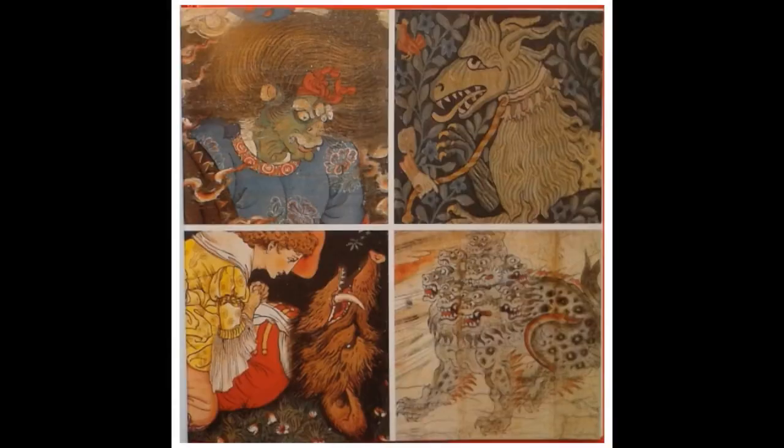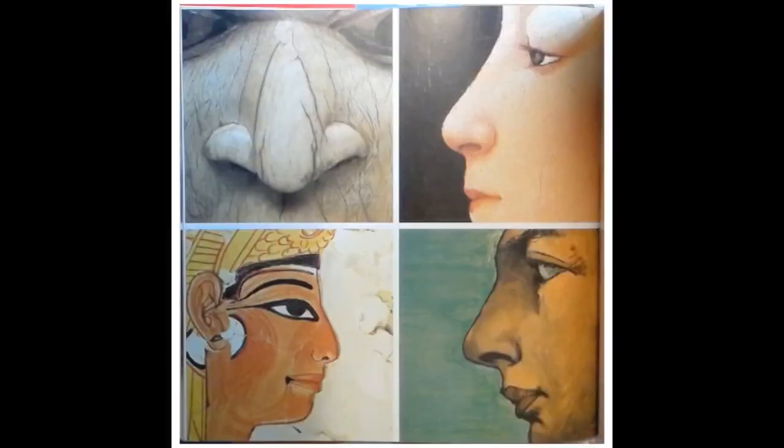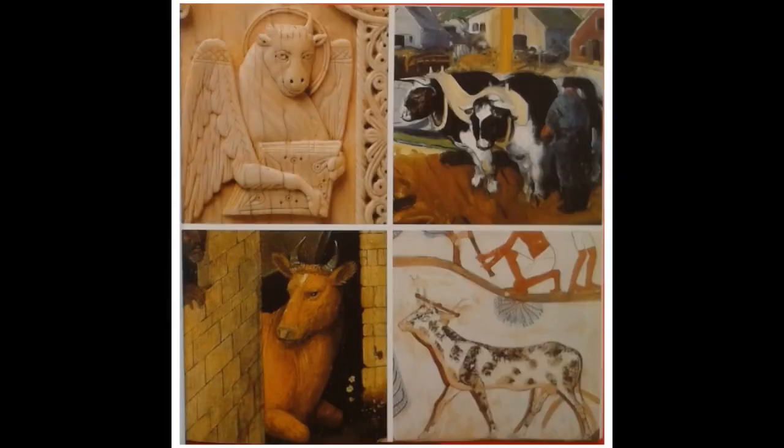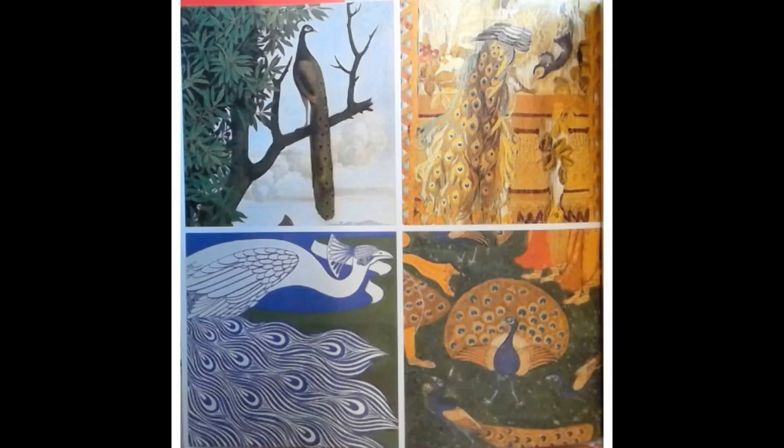M is for Monster. N is for Nose. O is for Ox. P is for Peacock.